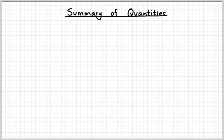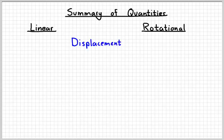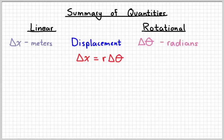So, real quick summary of the quantities we've learned about comparing linear motion to rotational motion. First important quantity is displacement. Linear displacement is given by the symbol delta x and it's measured in meters. Rotational displacement is given by the symbol delta theta and it's measured in radians. And we can go back and forth between the two using that equation, delta x equals r delta theta.